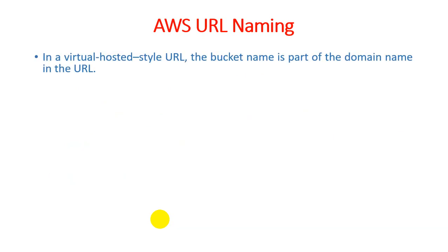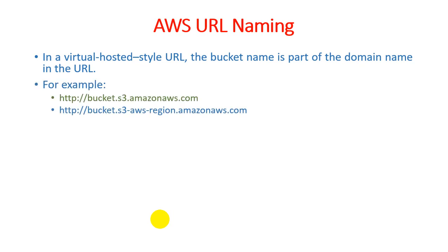In a virtual-hosted-style URL, the bucket name is a part of the domain name in the particular URL. The domain name is where the actual services are hosted. For example: http://bucket.s3.amazonaws.com — so we can access a particular domain through amazonawss.com. This method follows the pattern: bucket.s3-aws-region.amazonaws.com, where the region is part of the AWS services architecture.